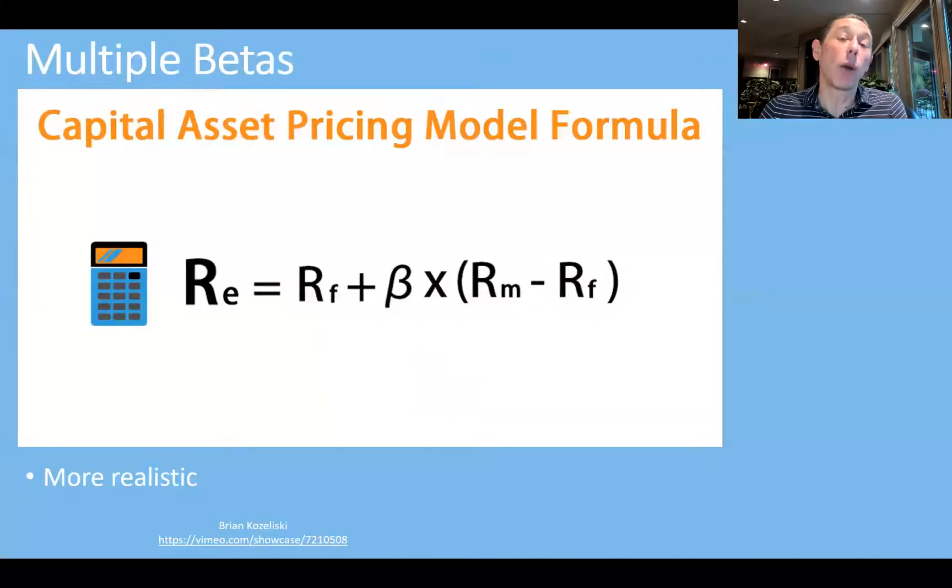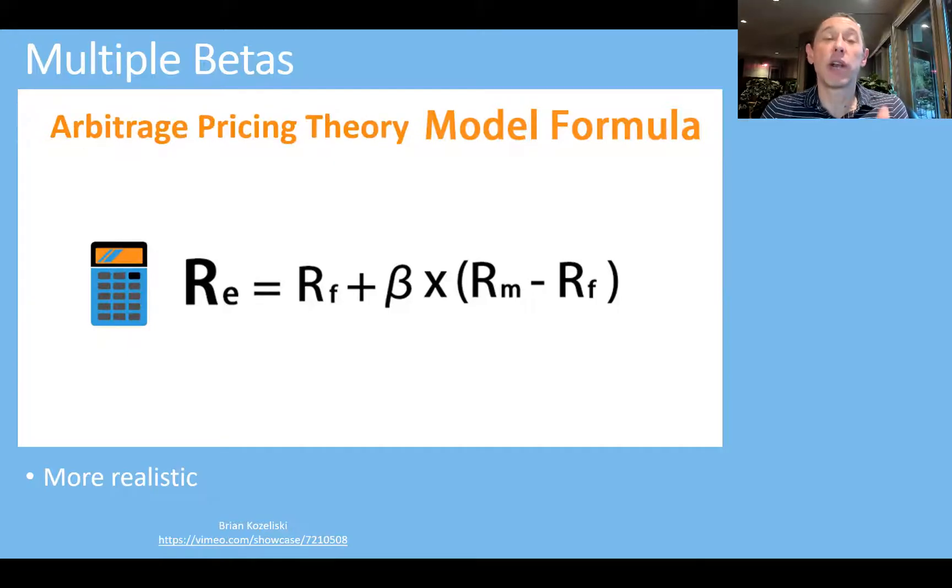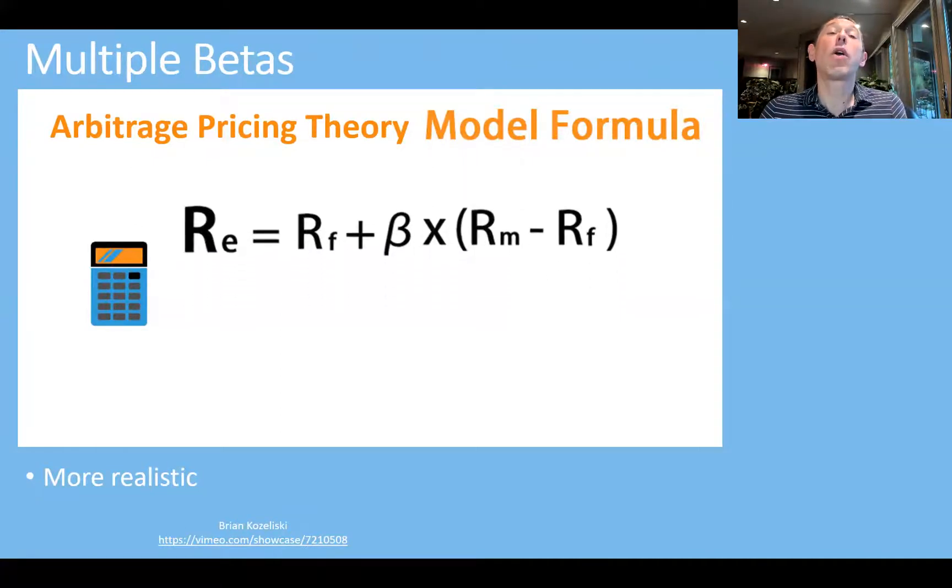So what the arbitrage pricing theory does is it attempts to improve the CAPM. The CAPM is really kind of a special case of the arbitrage pricing theory. In CAPM, there's only one beta, but APT says, well, maybe there are more betas.